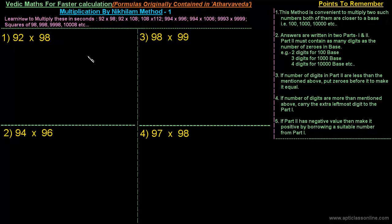We'll also be able to calculate squares of numbers like 98, 998, and similar numbers in just seconds. On the right side of this blackboard I've written some very basic points to remember whenever using this Nikhilam method, also called the base method, because it is convenient for multiplying two numbers both closer to a base — such as 100, 1000, or 10,000.